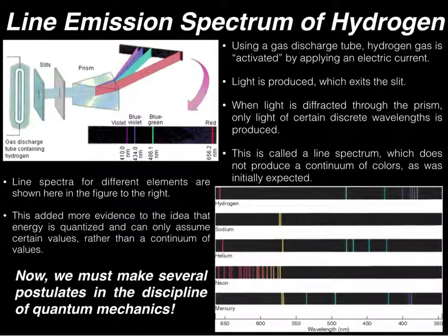Now with the line emission spectrum of hydrogen and these other particles or these other elements, we now know that energy does not take on a continuum of values and possibly particles like electrons don't either.